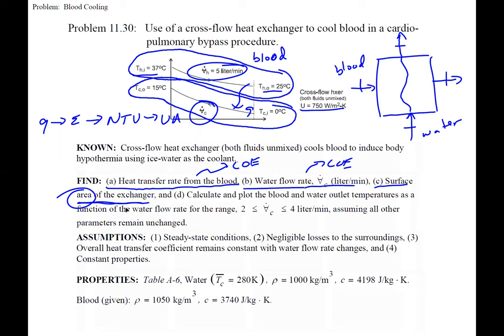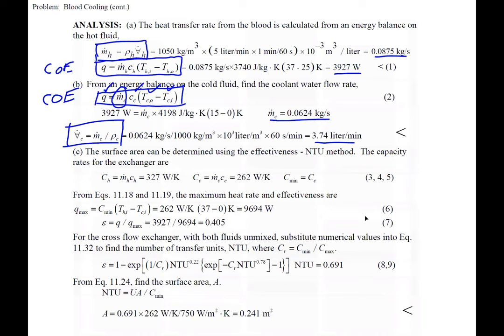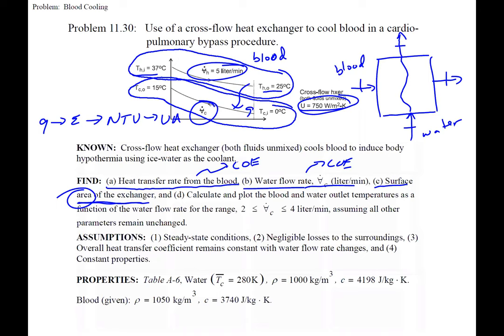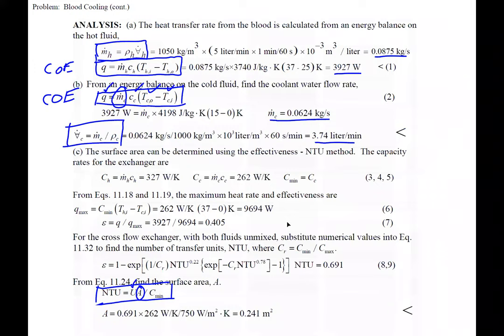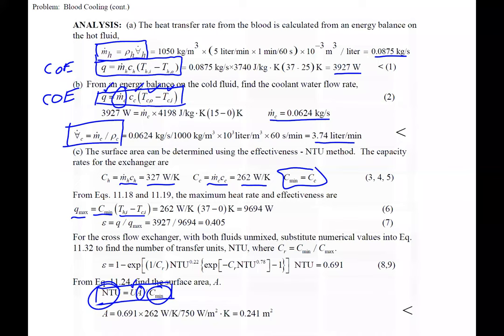For Part C: we need NTU to find the surface area. The overall convection coefficient U was given so we don't need the thermal circuit. We compute heat capacity rates as mass flow rate times specific heat for each fluid. The minimum ends up being the cold side (water), and maximum is the hot side (blood). Q_max is the minimum heat capacity rate times the difference in inlet temperatures.